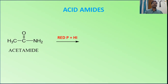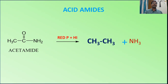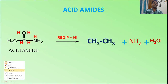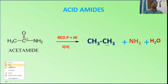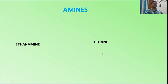For acid amides — acetamide, whose IUPAC name is ethanamide — when treated with this reagent, it converts into ethane, the NH₂ converts into NH₃, and the oxygen converts into water. Remember, one more hydrogen is needed for the carbon to form CH₃. Therefore six hydrogens are required in total.